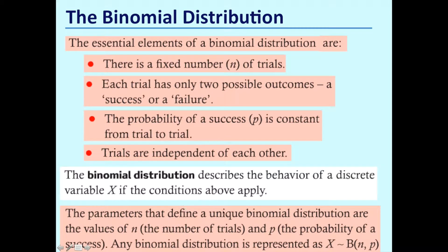The parameters that define the unique binomial distribution are the values of n, the number of trials, and the probability of success, p. We can represent it using this notation here. To represent the binomial distribution, we say that the discrete variable x is distributed binomially with n trials and the probability of success, p.